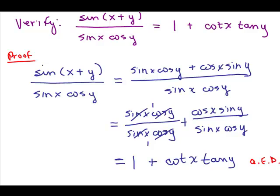Here's the more formal way you might see it written. It says verify sine of X plus Y over sine X cos Y equals 1 plus cotangent X tangent Y. Here the proof is: you take what side you're going to be working on, which in this case will be the left side, and then you show the steps.